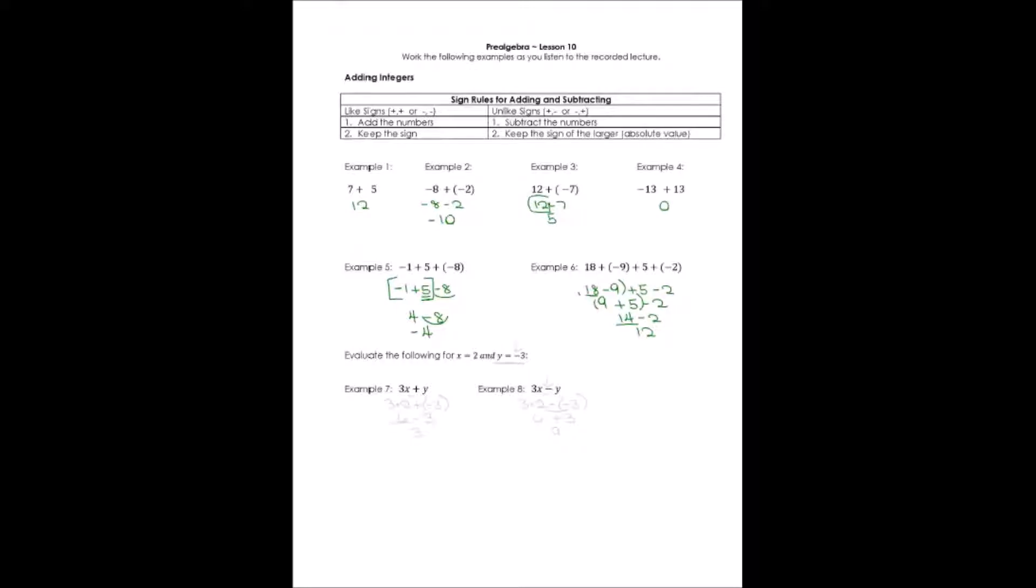In example 7, we need to do some evaluating. We need to plug in for the variables x and the variables y. And remember, we need to be cautious whenever we're substituting in a negative. So y is going to be tricky because y is equal to a negative 3. Let me show you how this can affect you. For example 7, I'm going to say 3 times whatever x is, and x is equal to 2. And then I'm going to say plus because the plus is in the expression. I'm going to look at what y is. y is a negative 3. Well, I usually use parentheses to separate two signs, like positive and negatives. But otherwise, I'll get confused.